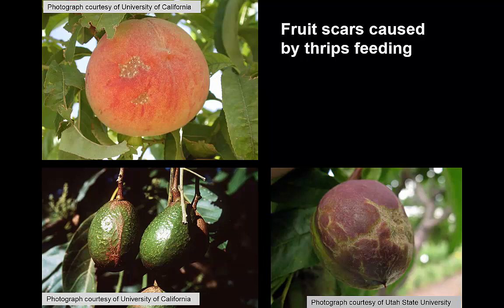Thrips don't limit their feeding to leaves. They'll feed in flowers, and if they're feeding within a flower where a developing fruit is trying to form, they'll feed on the surface of the fruit and this will result in a small scar that, as the fruit continues to grow, will become a more obvious scar. So the deformities illustrated here are all done by thrips feeding on these fruit at a very early stage in their development, because they're usually associated with the flowers and the very young fruit.